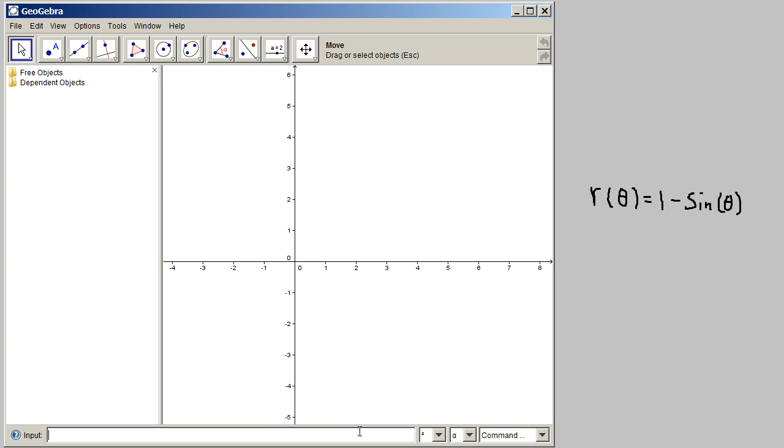So the first thing that we do is we just write f of x equals 1 minus sine of x. We replace the thetas with x and we just call this function f of x. And that graphs 1 minus sine theta, or 1 minus sine of x. We don't actually need to see this function, so in the GeoGebra window I'm going to click this little dot and that will toggle the visibility. I can click it again to bring it back, but I don't actually need to see it for now.